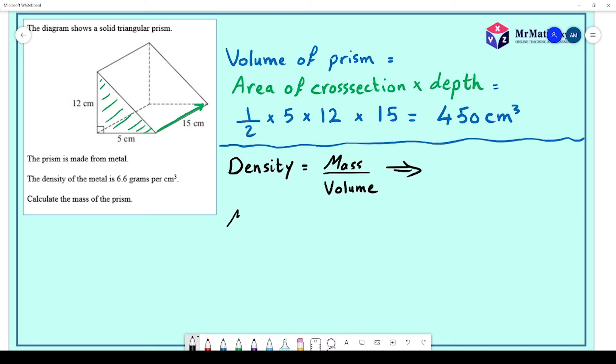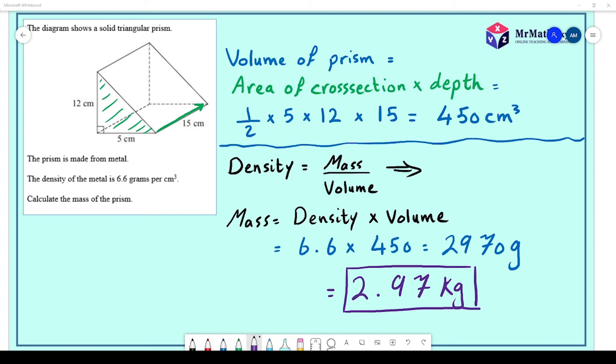Then we know the formula to find the density is mass over volume. We'll rearrange it to find the mass equals density times volume. Finally, we'll substitute all the numbers and we'll get the answer 2970 grams. Don't forget to change it into kilograms. You have a final answer of 2.97 kg.